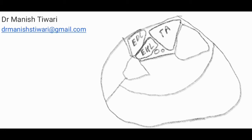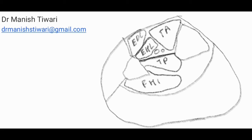In the posterior compartment, just below the interosseous membrane, you have the tibialis posterior muscle. There is also the flexor hallucis longus muscle. Between these two muscles — the tibialis posterior and flexor hallucis longus — you will find the peroneal artery and the respective venae comitantes. Another muscle here is the flexor digitorum longus muscle, and here you can find the posterior tibial artery and vein.